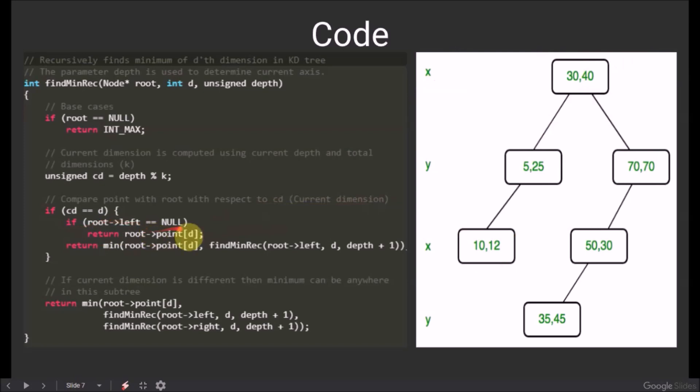If root arrow left is equals to null, that is when the node doesn't have any left subtree, then we can conclude that the current node is the minimum node and return it. But in case there is a left subtree in the node, we have to find the minimum of that subtree by recursively calling the function and passing the left node, the dimension, and increase the depth by one. We also have to compare the value with the current node and return minimum of these both values.